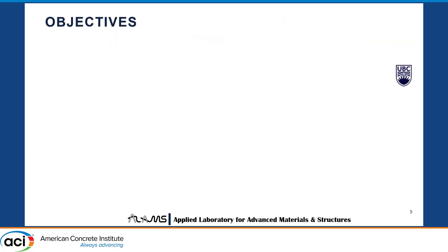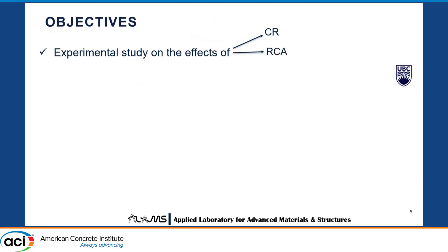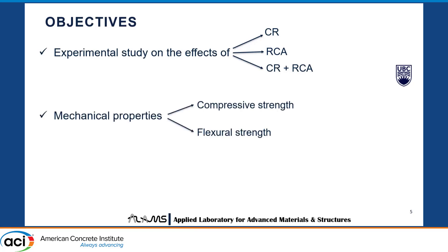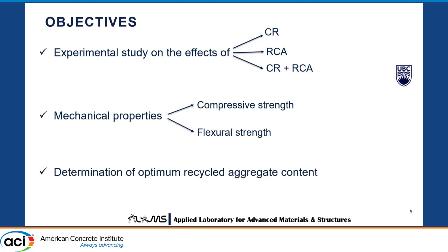The specific objectives of my study: I focused on investigating the prospects of using crumb rubber and RCA in concrete. First, I used only crumb rubber in my concrete mixtures to see its effects, then only RCA in the concrete mixtures, and then a combination of both crumb rubber and RCA. The mechanical properties studied were compressive strength and flexural strength, and from the results I aimed to identify the optimum recycled aggregate content.